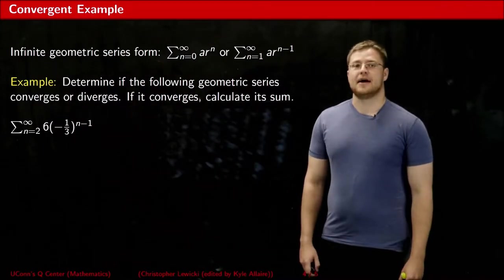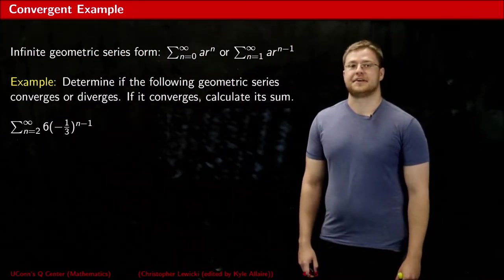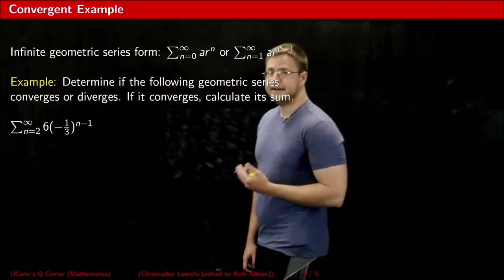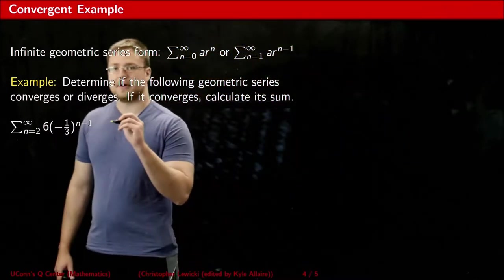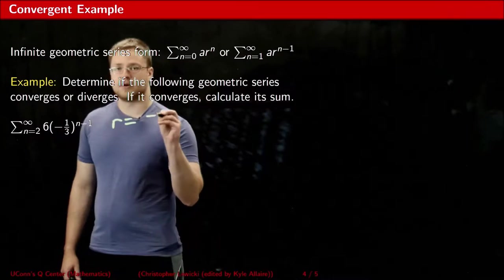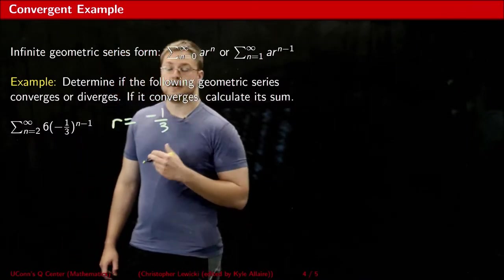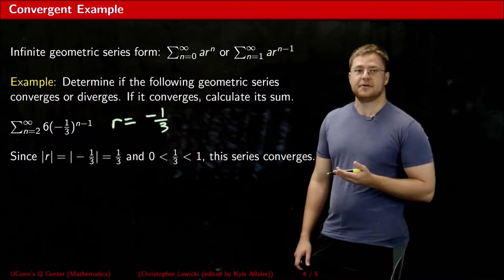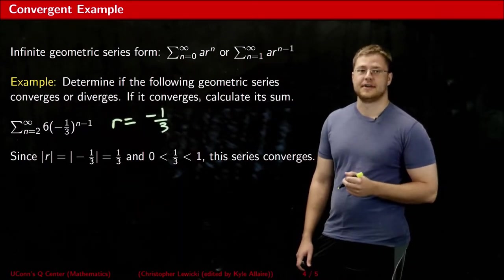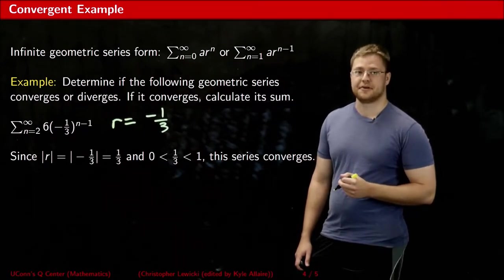Now let's look at an example of a geometric series that converges. I could immediately tell in this example that my r value is negative 1 over 3. The absolute value of negative 1 over 3 is positive 1 over 3, which is between 0 and 1, which confirms that this series converges.